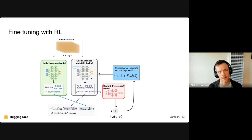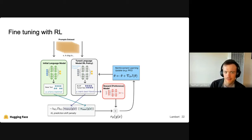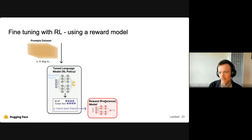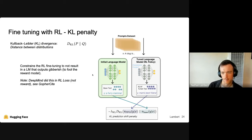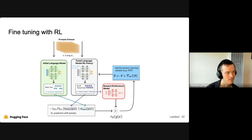Once you have a reward model, you set up something more complicated with RL. The key points: you take a prompt, pass it through the language model to get a completion, then use the reward model to get a scalar. Crucially, you need to construct a KL penalty so the RL optimizer doesn't exploit the reward model — you compare tokens generated by the policy you're training to the base model and penalize large divergence. Putting it all together ends up being a significant engineering task.